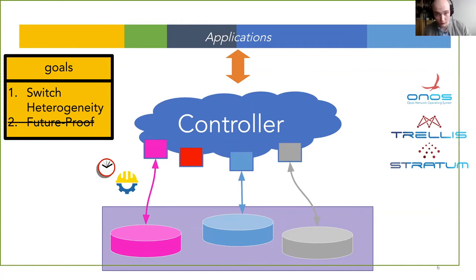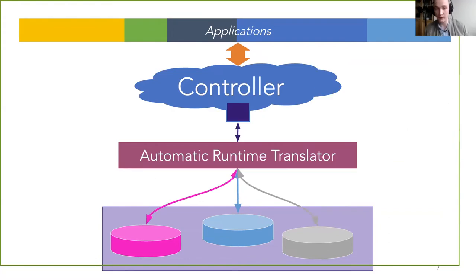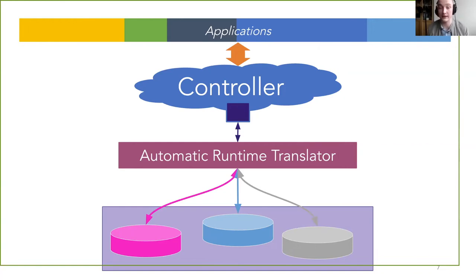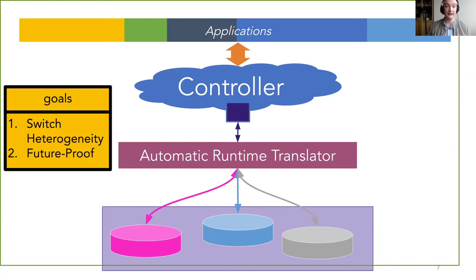That's where Avenir comes in. Avenir is a tool that is an automatic runtime translator that exposes a single abstract switch to the controller and automatically translates the controller's operations on that abstract switch into the myriad physical devices that run in the real network. Because it's automatic, it maintains both the heterogeneous goal and the future-proof goal.